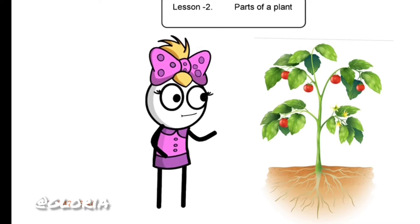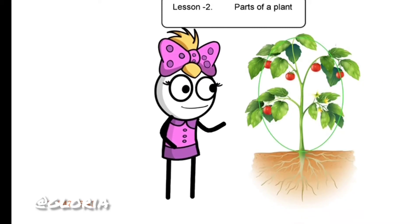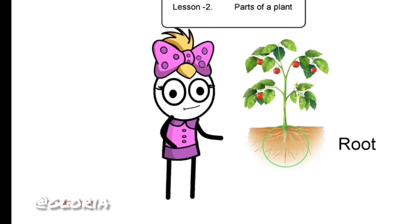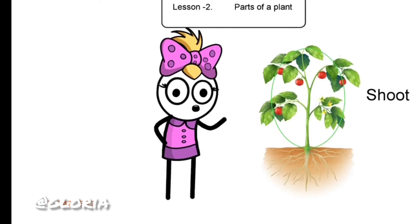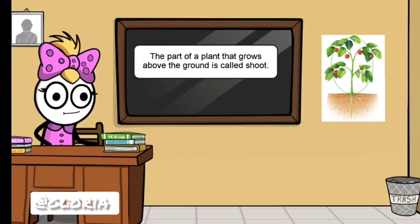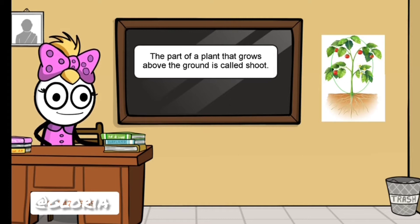Now look at our tomato plant. This part of the plant is shoot, and this part of the plant is root. This part will always be under the ground. The part of a plant that grows above the ground is called shoot. Look onto the board and read: the part of a plant that grows above the ground is called shoot.